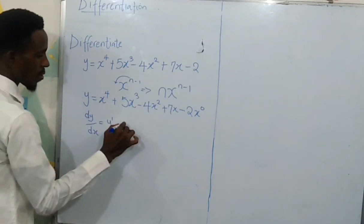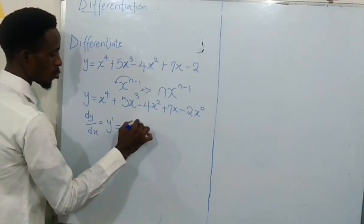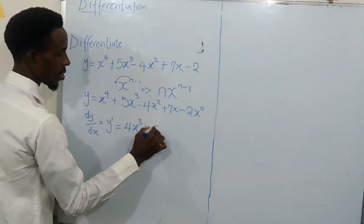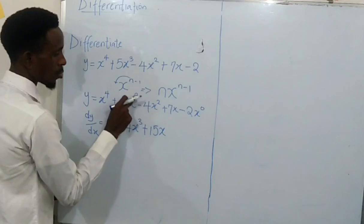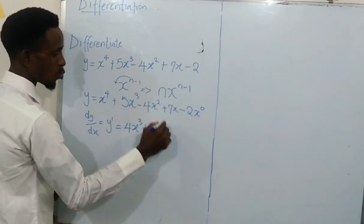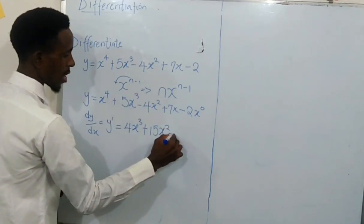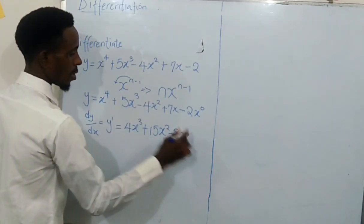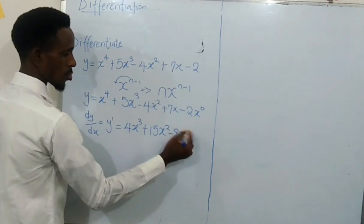Now, this is going to be 4x to power 3, plus 3 times 5 is 15x. So 3 here now, minus 1 is 2, so 15x squared. Then minus 2 times this gives me 8, and 2 minus 1 is just x.